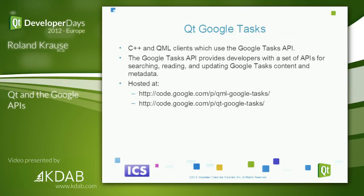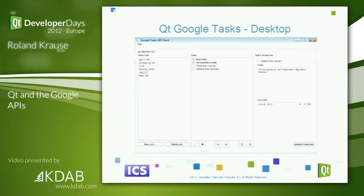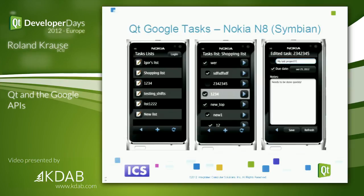The Google Tasks API has C++ QWidget-based and QML clients. The API provides developers with functionality for searching, reading, and updating Google Tasks content — essentially to-do lists. You can integrate this into your own QWidget-based applications and get a to-do list back-end. We also built a Symbian client for the Nokia N8.